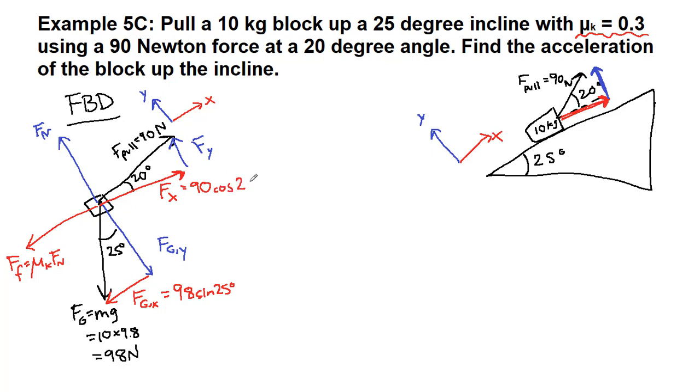So the x component of our pull force is 90 cosine 20 degrees because we're adjacent to the angle. But the x component of gravity is 98 sine 25 degrees because we're opposite where that angle is. The y component of our pull force then is opposite the angle. So it's sine 20 degrees.